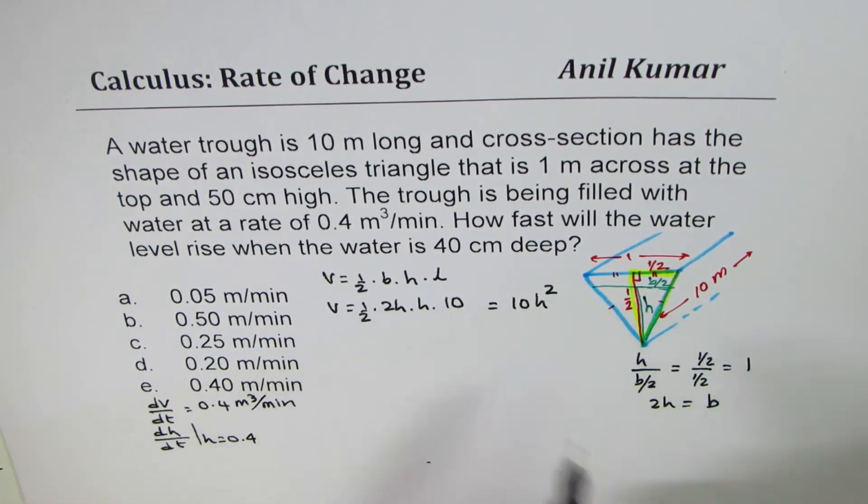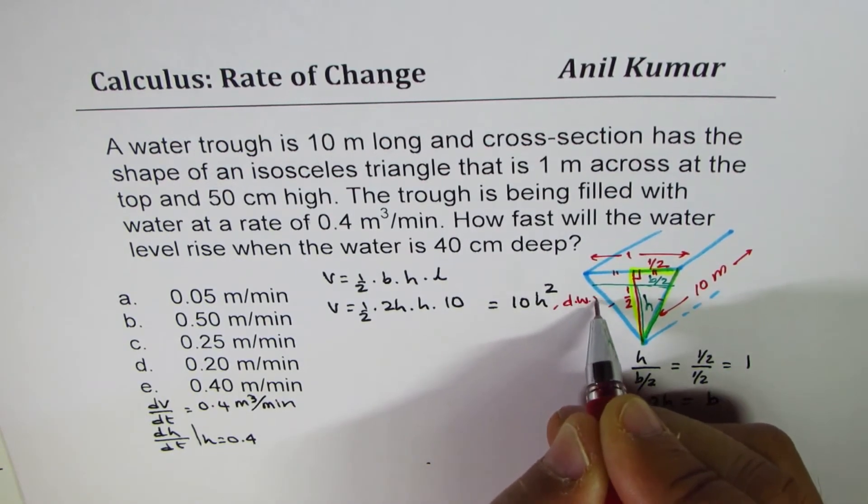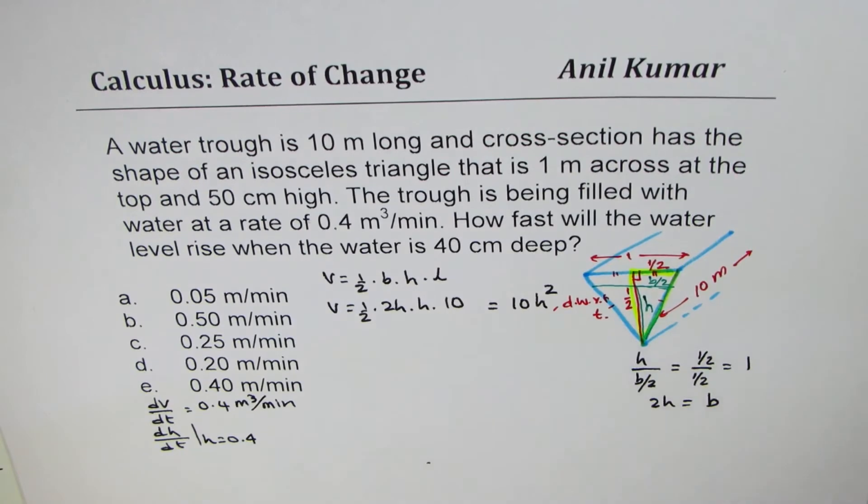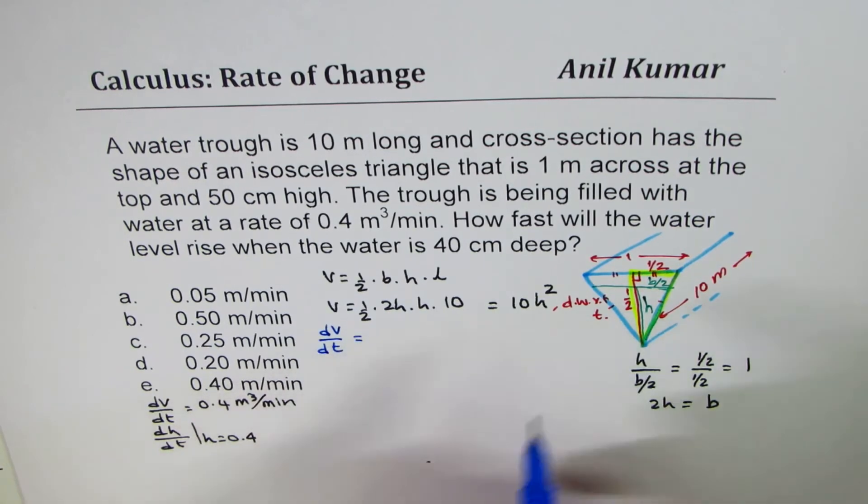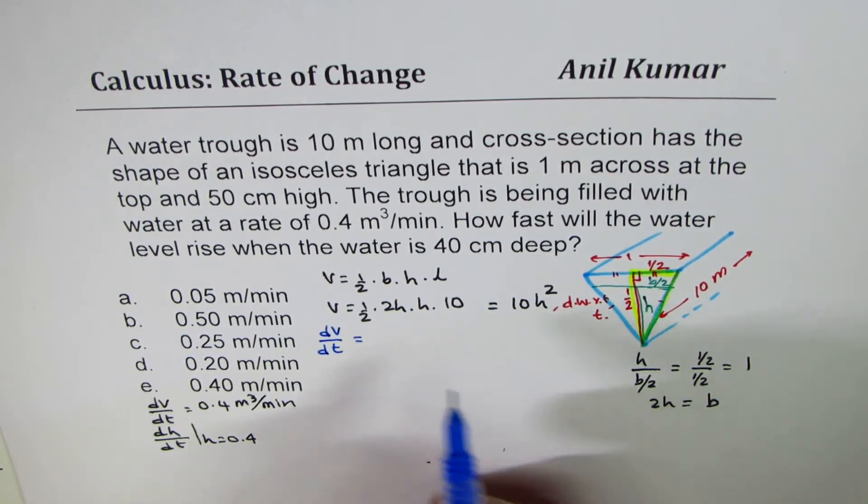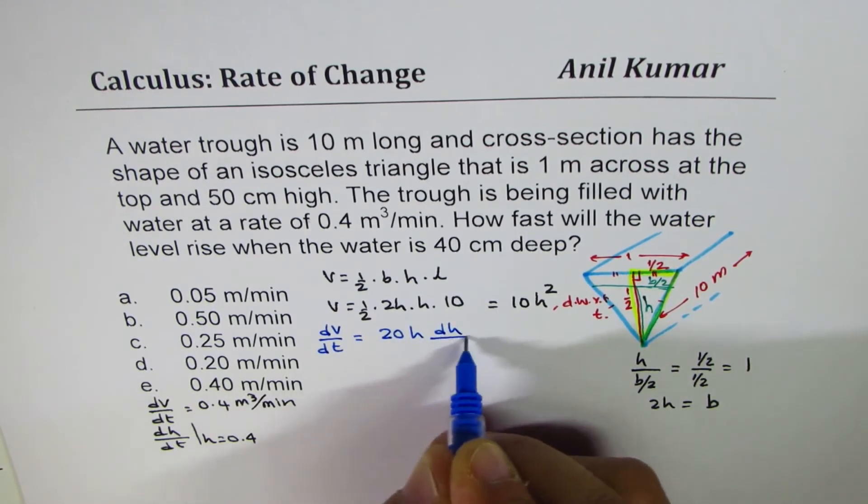Now we can differentiate this with respect to time. So we'll differentiate with respect to time. That gives us dv/dt equals to twice h versus 20 h dh/dt.